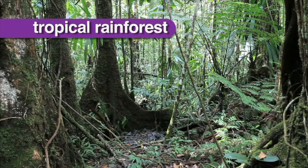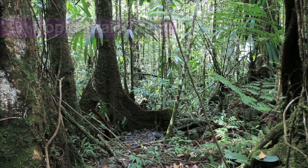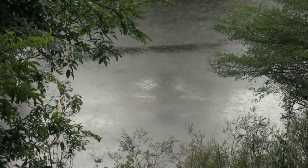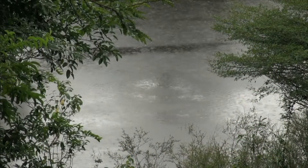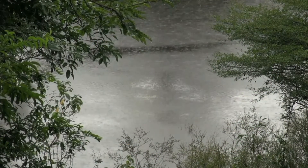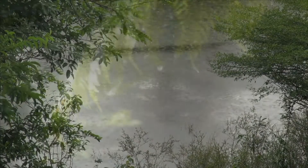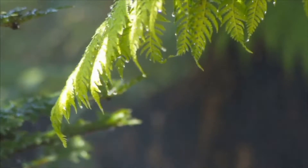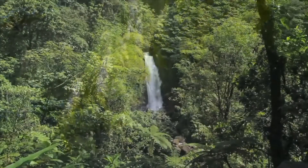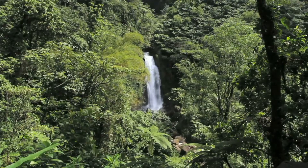Tropical rainforests are found in really warm regions of Earth, usually around the equator. Tropical rainforests are found in areas that receive rain almost every other day of the year, and experience summer all year round.